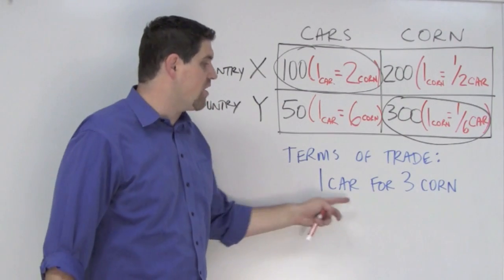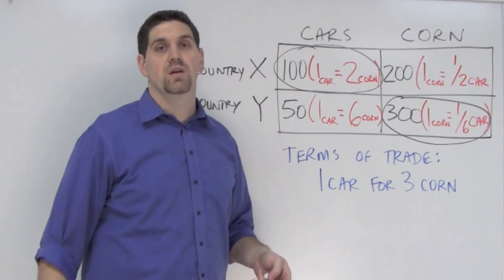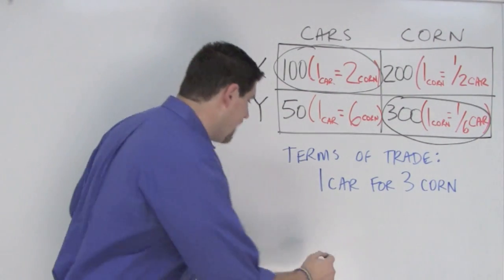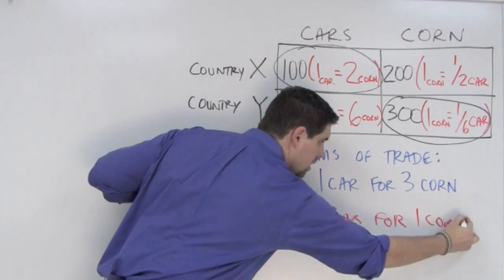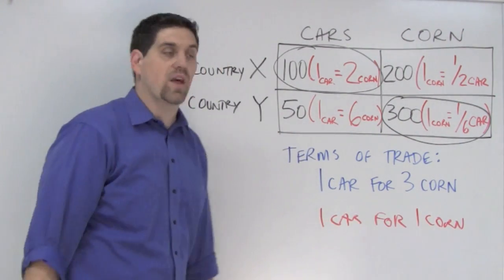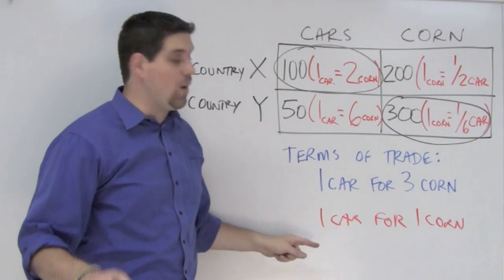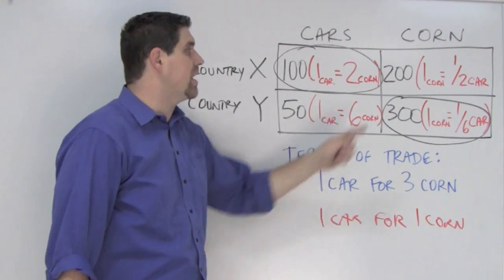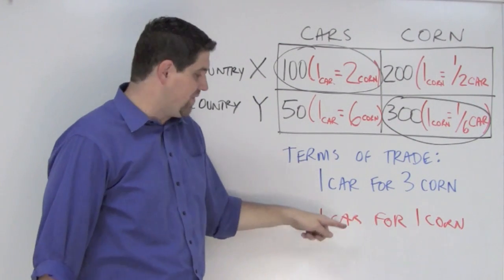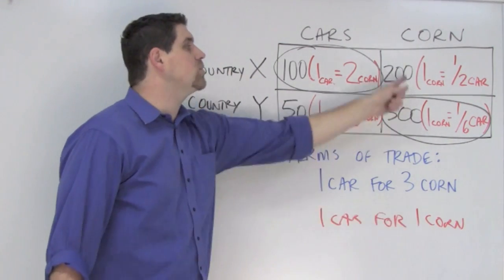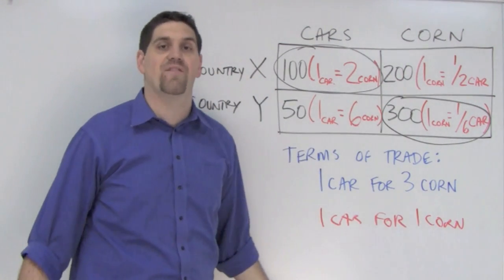But why does trading one car for three corn benefit both countries? Well, how do we look at one of the other numbers? Let's say one car for one corn. Does this benefit both countries? Country X does not want this deal. If they decide to produce corn themselves, they'd give up a half a car. In this situation, they'd have to give up a whole car. They'd have to give up one car and gain a corn. Might as well produce the corn themselves and just give up a half a car.